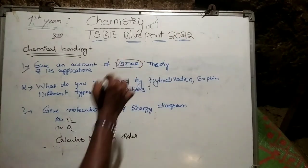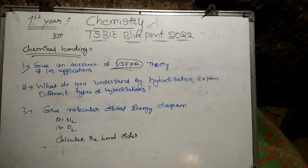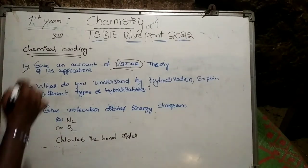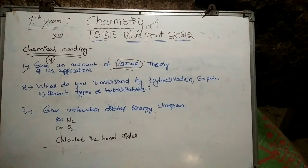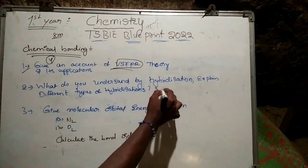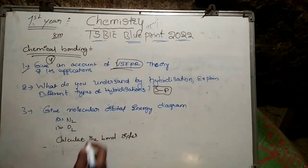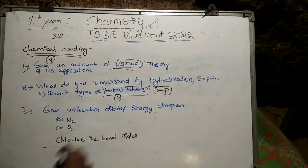I have valence bond theory and valence electron theory to explain with their applications. The second question is: what do you understand by hybridization? Explain the different types of hybridization. We have SP, SP2, and SP3 hybridization, which will be explained with diagrams. This is an 8-mark question.